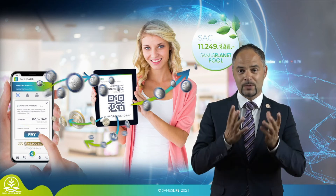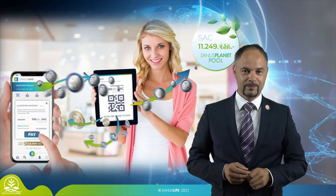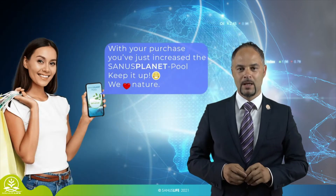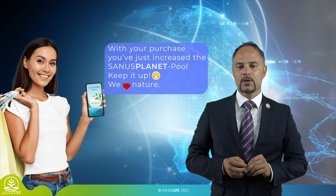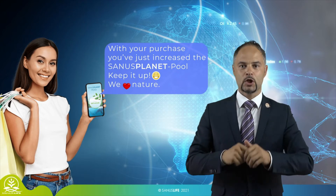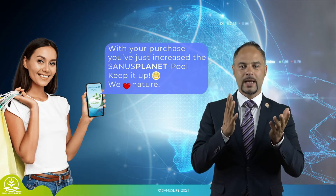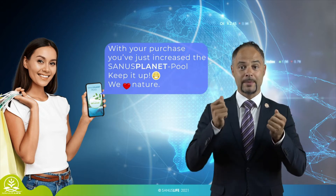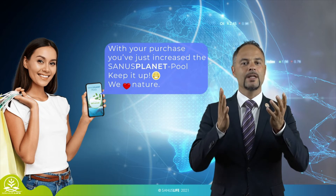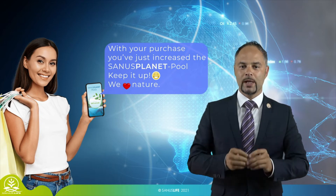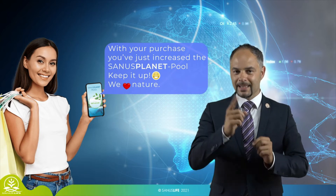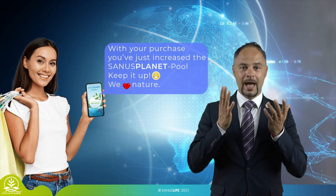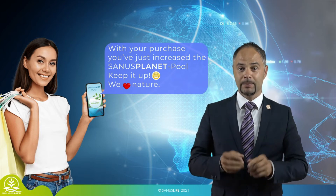There are several reasons why community members prefer to buy products and services in the Sanus life ecosystem. I will explain this by means of a specific example. Sonia pays for a product in your shop with the Sanus coin — the green voucher. Immediately, a share of the money flows into the Sanus planet pool. That is, Sonia invests in important social projects, environmental projects and animal welfare projects at the same time she pays — and she sees the amount on her mobile phone immediately, getting a 'We Love Nature' thank you displayed.